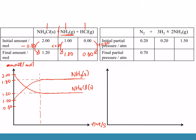HCl starts at zero and ends at 0.8. That's roughly how the amount-time graph should look for this example.